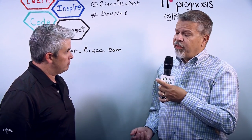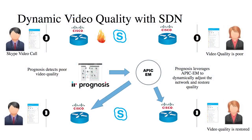Tell us about Prognosis and how it uses APIC-EM. So what we're doing now is we're integrating with the APIC-EM so that Prognosis, which has always been able to monitor all your UC environment, your contact center environment, and constantly doing monitoring, detecting problems — now we can detect maybe a Cisco TelePresence video call starting to have poor latency. Once we've identified that problem, we can work with the northbound APIs via APIC-EM and apply a dynamic QoS policy to that existing call in real time.